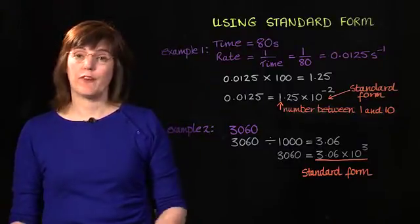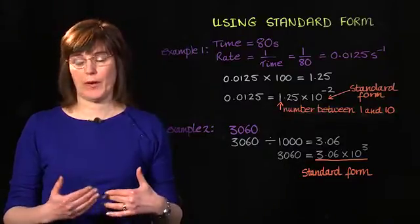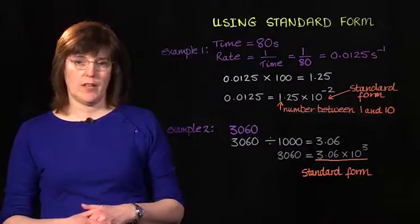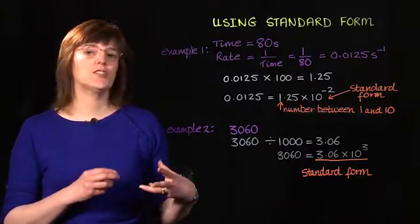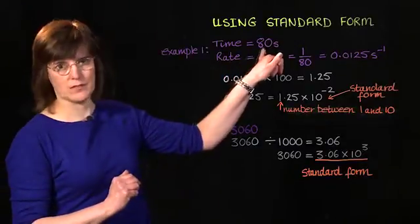Standard form is a way of writing very small or very large numbers easily in a manageable way. So for example, in an enzyme experiment, the enzyme amylase broke down a fixed amount of starch into sugar in 80 seconds. The time was 80 seconds.